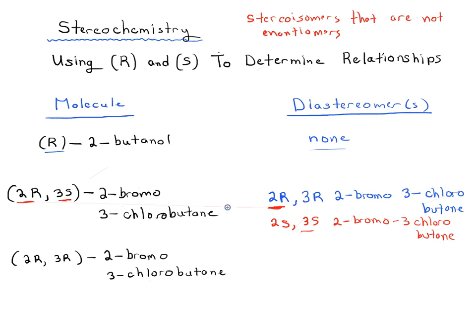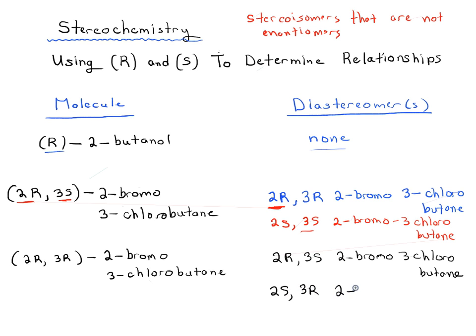Diastereomers are a relationship — you're always comparing molecules to each other, not looking at things in a vacuum. It's like needing two children to have a brother. For 2R3R-2-bromo-3-chlorobutane, its diastereomers would be 2R3S or 2S3R-2-bromo-3-chlorobutane — keep one designation the same and flip the other.